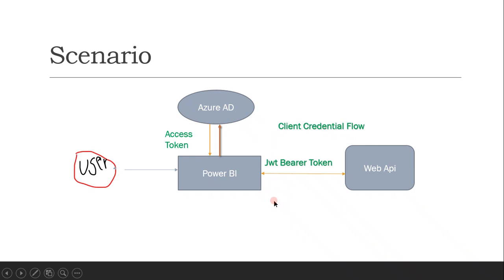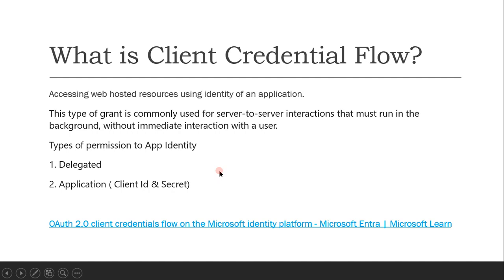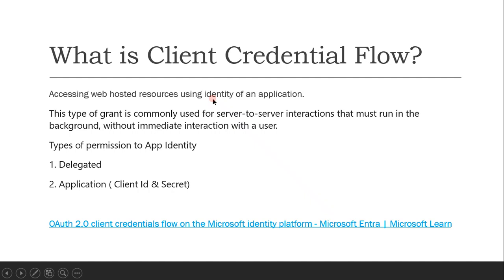In this case we are using the client credential flow. Client credential flow is nothing but accessing web-hosted resources using the identity of an application registered in Azure Active Directory. Each application should have its own identity in the active directory — that is the client ID. This grant type is commonly used for server-to-server interaction that must run in the background without immediate interaction with the user — basically authenticating web resources without any user interaction.